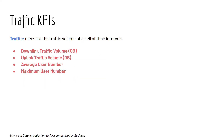Traffic KPI is straightforward: it measures the traffic volume of a cell at any given time interval. We have the total amount of download traffic and the total amount of upload traffic. We also look at the average number of users connected to the cell and the maximum number of users connected to the cell.